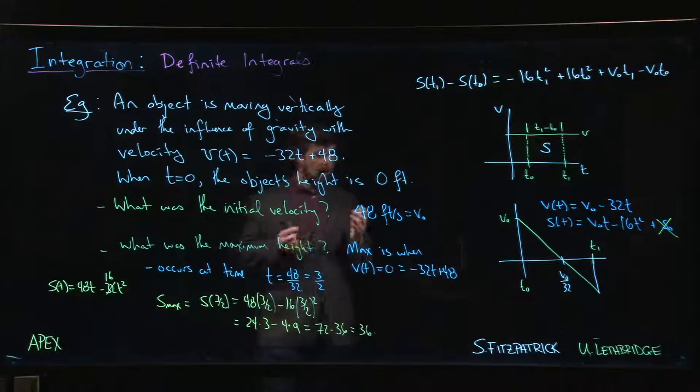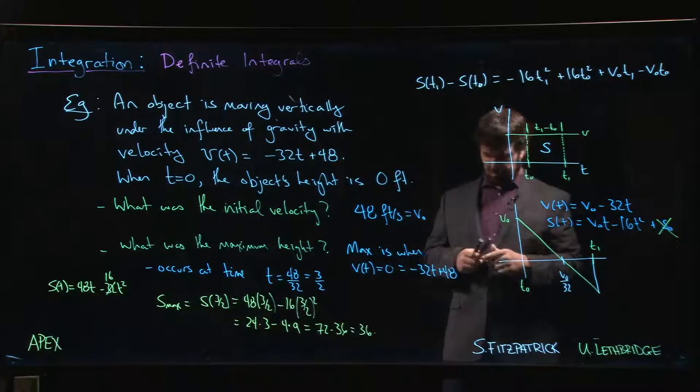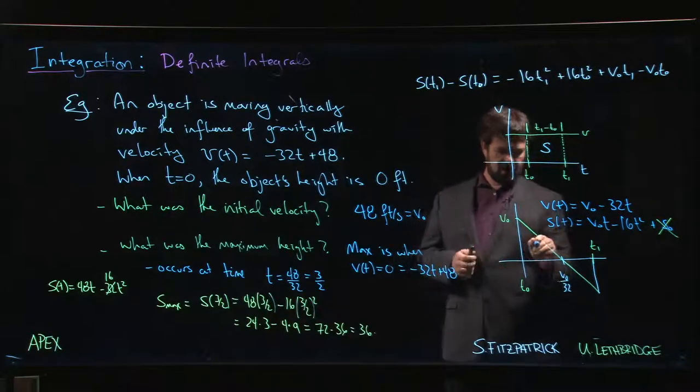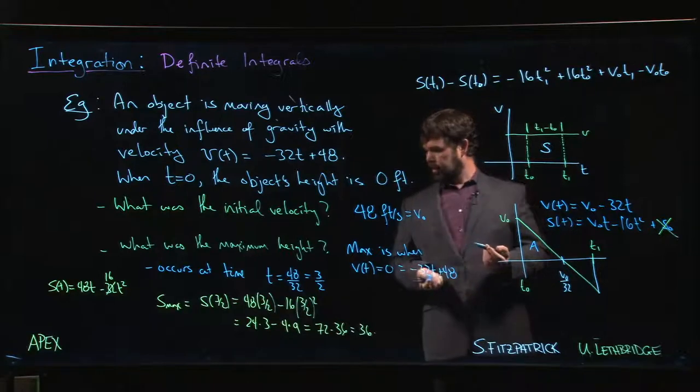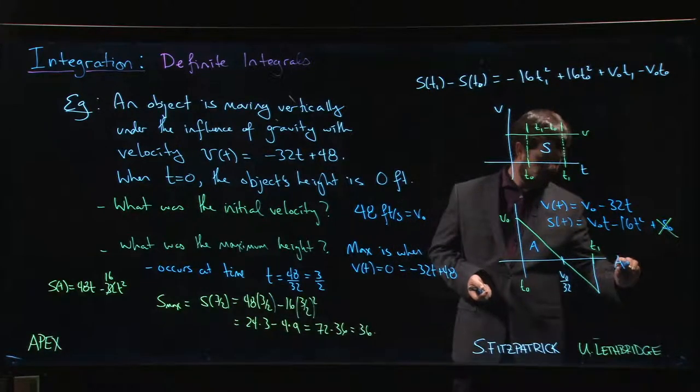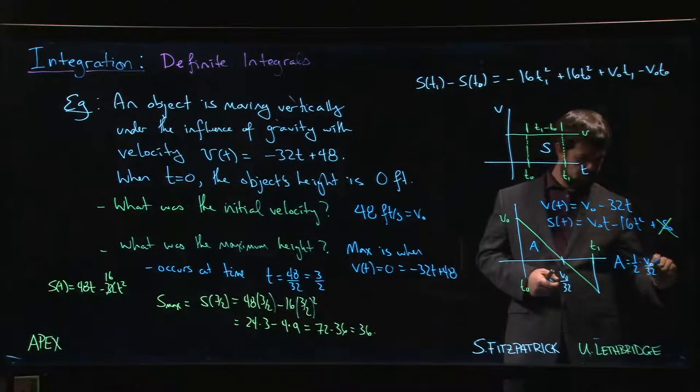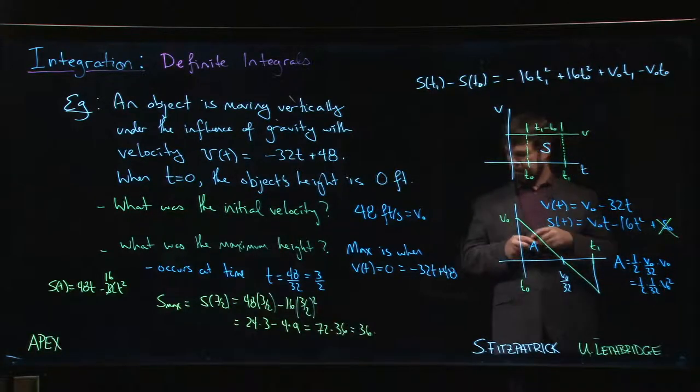I want to point out that this height happens at this point in time, and we started with height of zero. I want to tie that into what is the area here. Looking at the triangle, that area is going to be one half of the base, v₀ over 32, times the height v₀. So one half times 1 over 32 times v₀ squared.